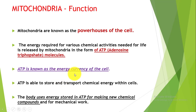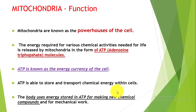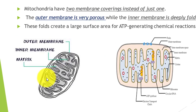ATP — adenosine triphosphate — is able to store and transport chemical energy within the cell. Wherever the cell requires energy, it is transferred in the form of ATP, which is made in the mitochondria. The energy stored inside ATP is used by the body for making new chemical compounds and for mechanical work. So we require energy not only for chemical work but also for mechanical work, and this is supplied in the form of ATP, which is developed in the mitochondria.